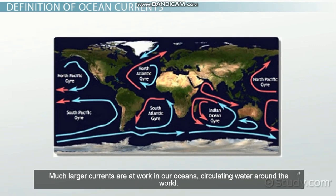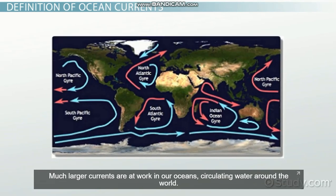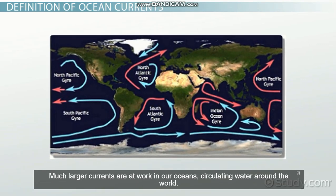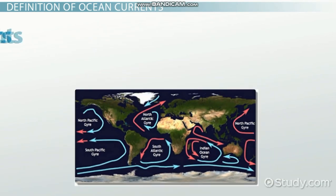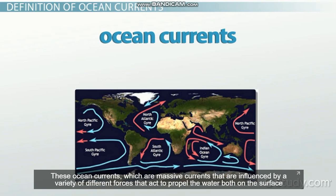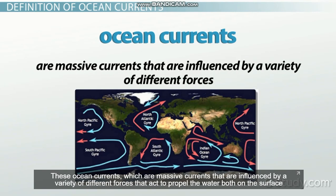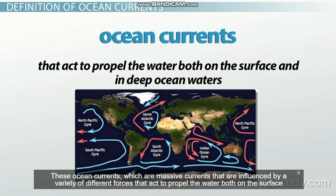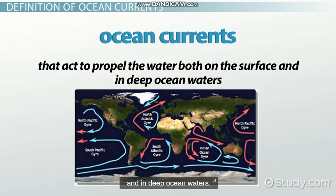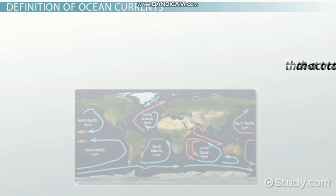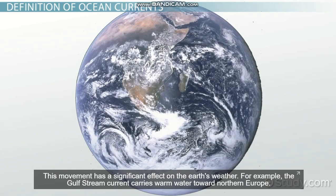Much larger currents are at work in our oceans, circulating water around the world. These ocean currents are massive currents that are influenced by a variety of different forces, that act to propel the water both on the surface and in deep ocean waters. This movement has a significant effect on the Earth's weather.